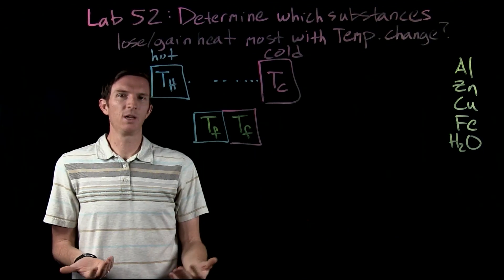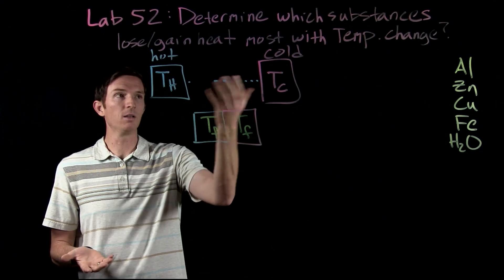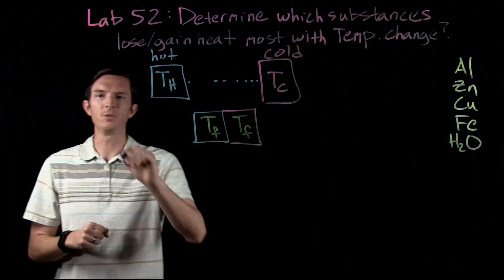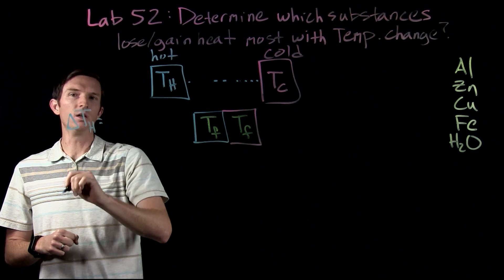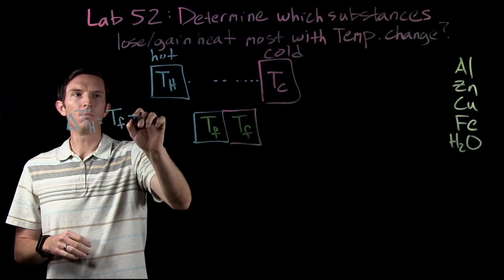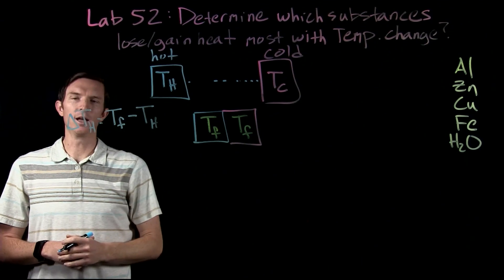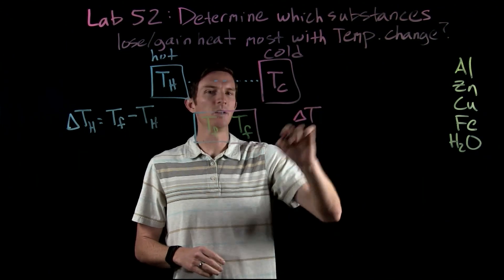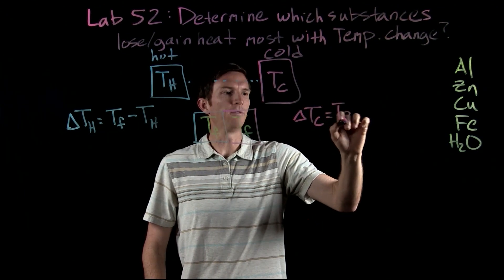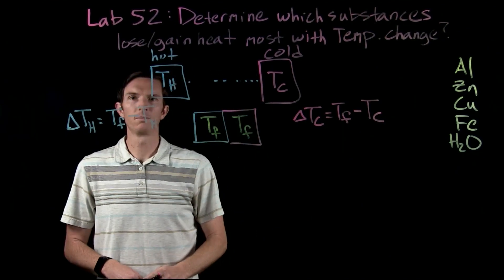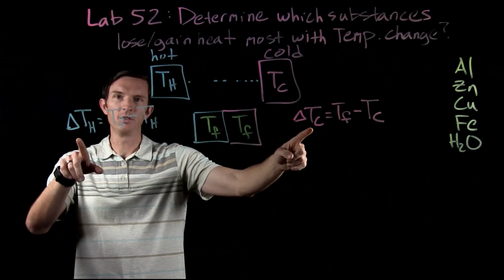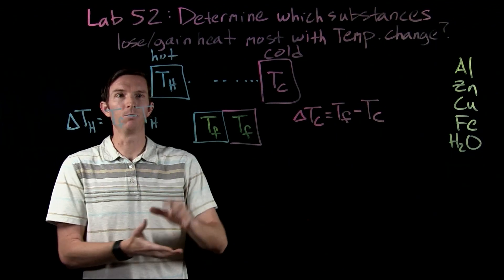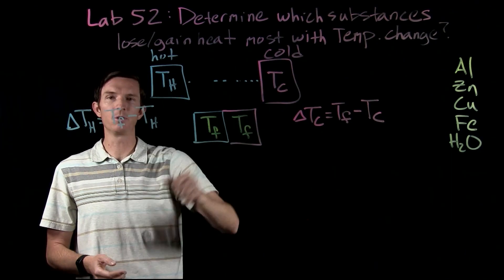Now, does the hot object lose the same amount of heat as the cold object? Do they change the same temperatures? If we look at our hot object, the change in temperature is going to equal the final temperature it ends up at minus the temperature it started at. And if we did the same for our cold object, the change in temperature it undergoes is going to be the final temperature minus the temperature it started at. These are things we can measure in a lab — we can measure the temperature they start at and the temperature they end up at.